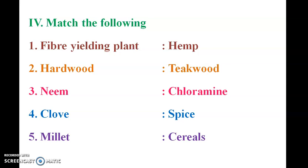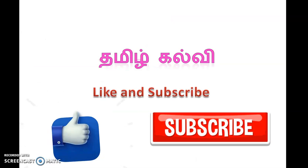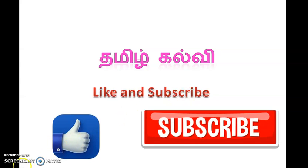Match the following: Fiber yielding plants — hemp. Hardwood — teakwood. Spices — clove. Cereals — millet. Fruits — mango. Coconut fiber and rose — ornamental. Bees — pollinator insects. Earthworms — natural manure. Thank you students, we will see you in the next video.